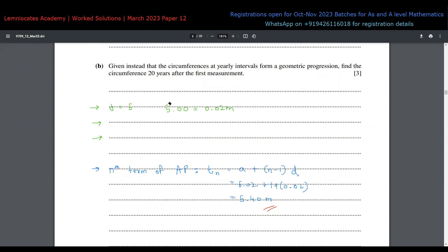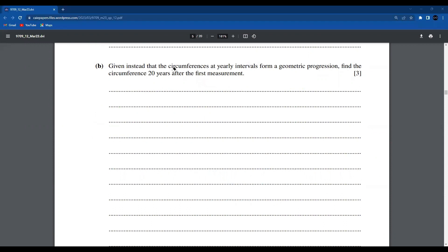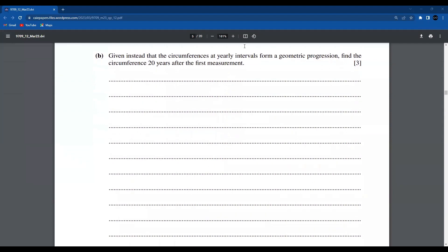Now we're having a geometric progression and we have to again find the circumference after 20 years from the first measurement. So again we're going to consider 5.02 as the first term. But now for the geometric progression, we don't have a common difference. We have common ratio r. That's something we will have to find. What's your common ratio for geometric progression? It's the next term divided by the current term.